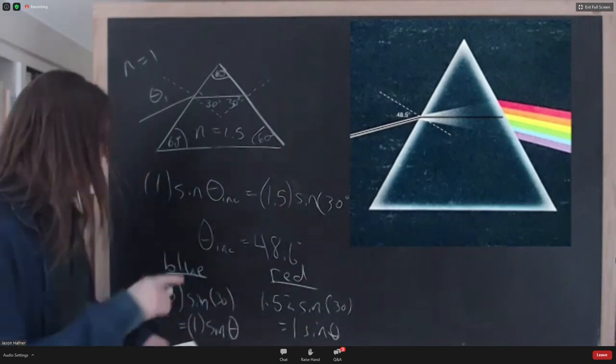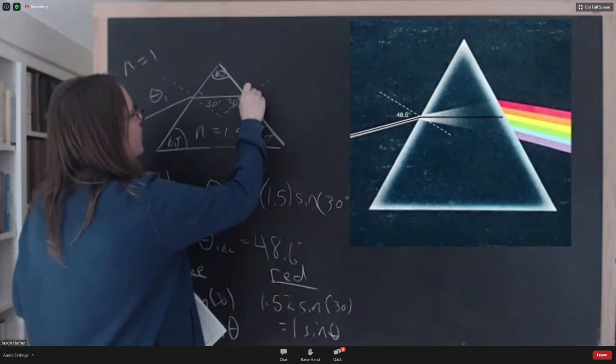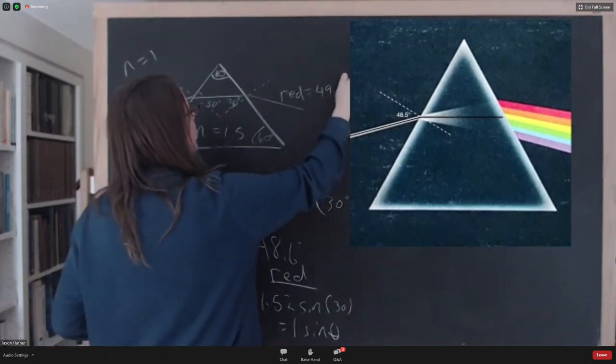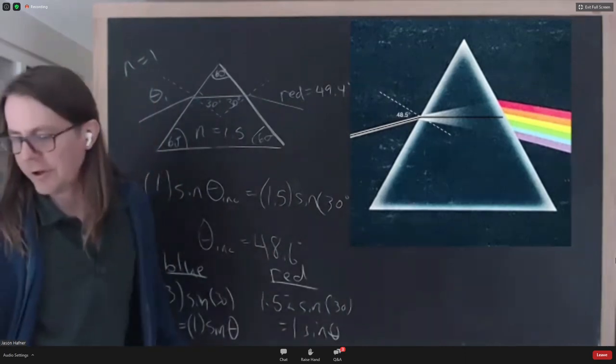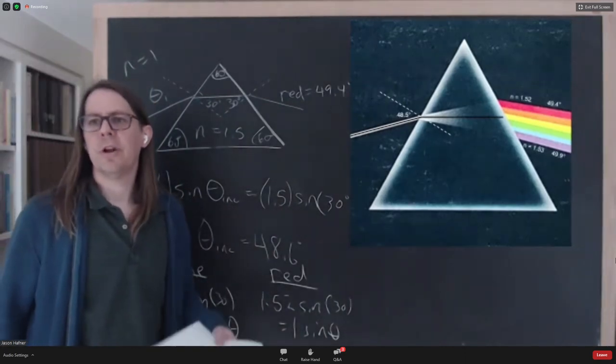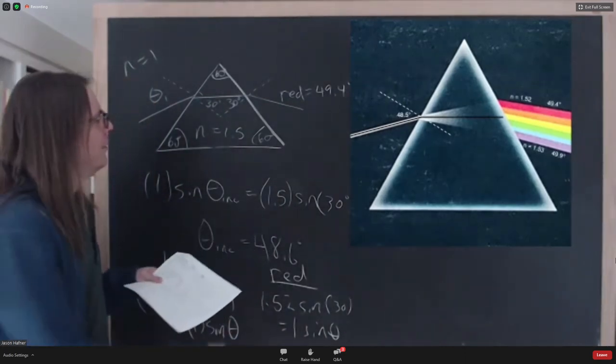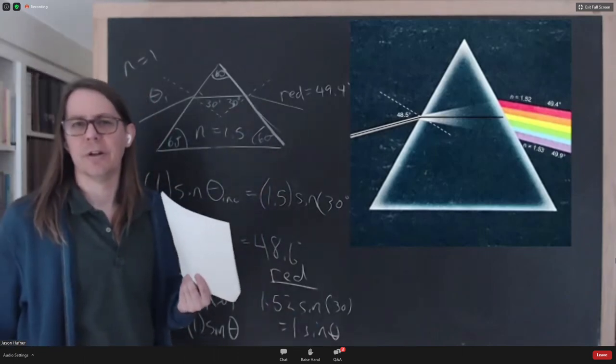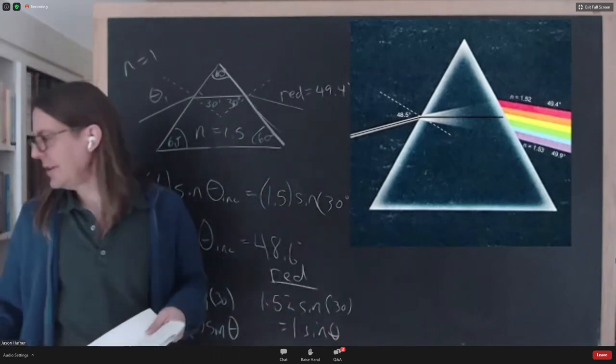So what are the angles we're going to get? If we calculate them. We'll get 49.4. So red, 49.4 degrees. Sorry, I drew them for you. So 49.4 for red, 49.5 for blue. So they come out at different angles. That's why you could imagine that they separated a little bit.